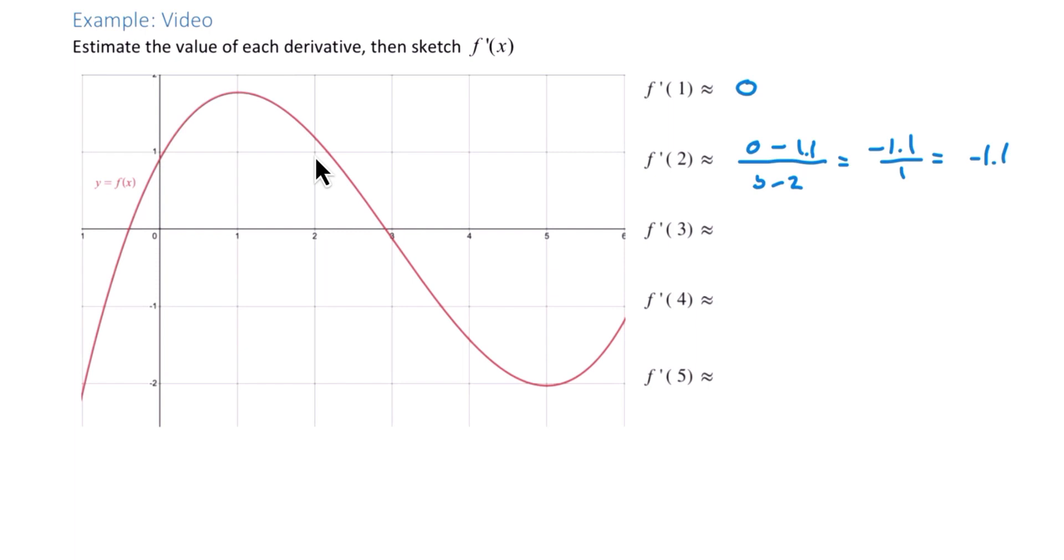Next, we'll do the same thing at 3. So here's a point on 3. We're looking for the slope of the tangent line at that point. So we can draw a rough tangent line to that point and estimate the slope. So again, we'll use a slope formula.